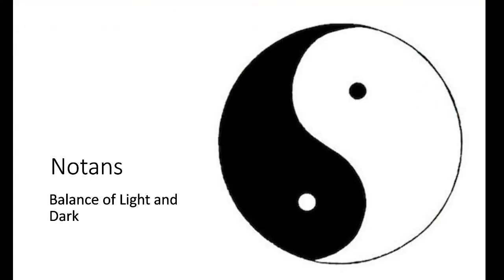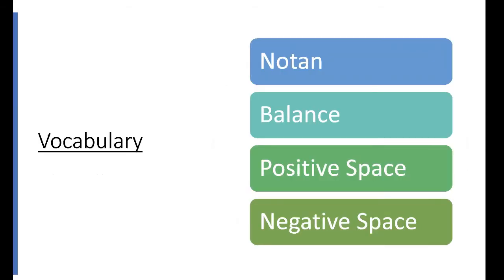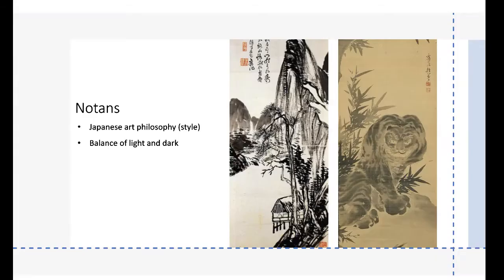Notans are the balance of light and dark. The easiest example is the yin and the yang — you may have seen this symbol. It's the mirror opposite of itself, and the meaning of yin and yang is balance. So Notans are the balance of light and dark. The vocabulary we're going to talk about today includes Notans, balance, and positive and negative space.